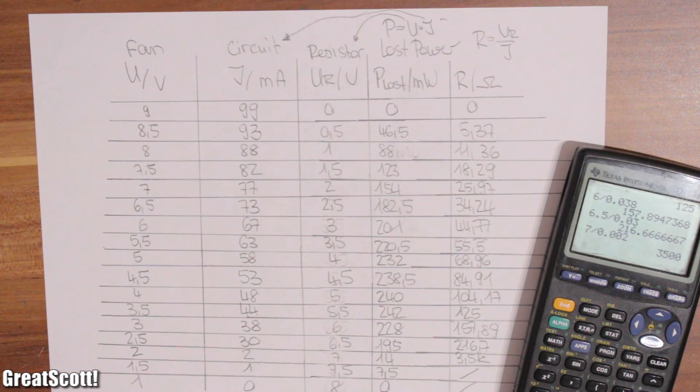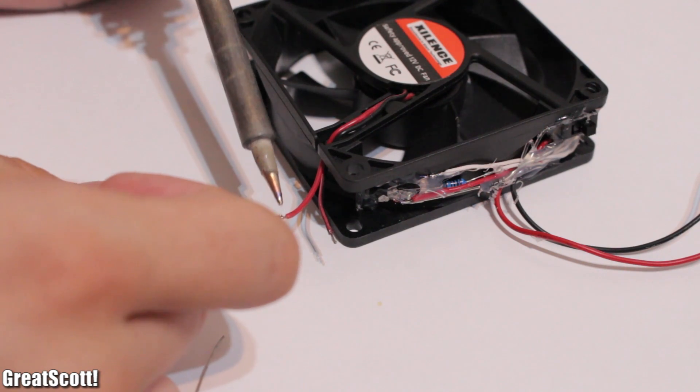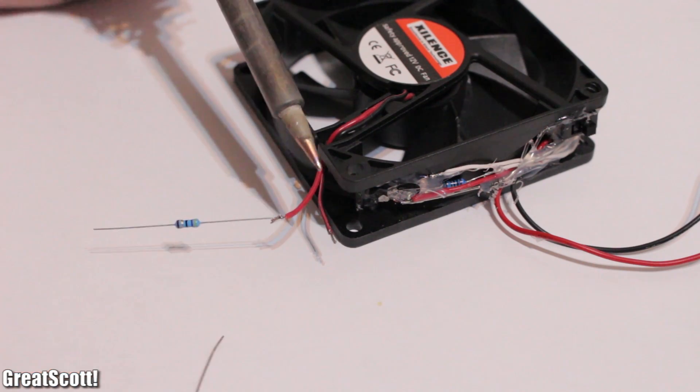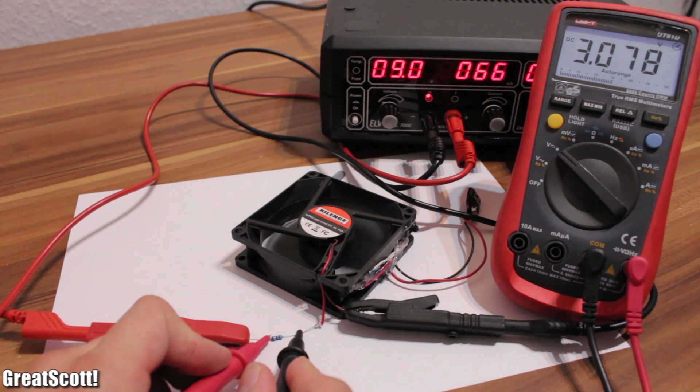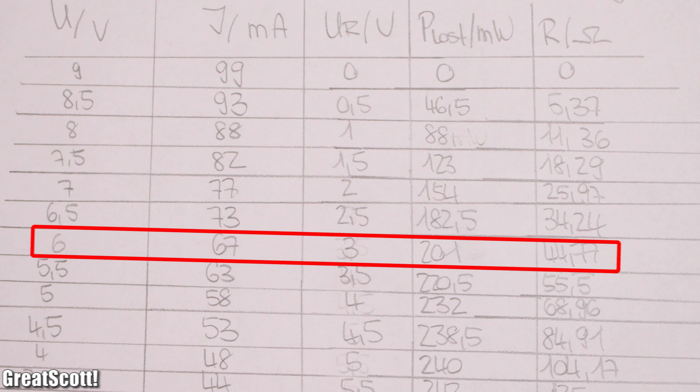Now you are thinking, is this really true? We can test it. Here is a 47 ohm resistor. I put it in series and bam. A voltage drop of around 3 volts and a current flow of around 64 milliamps. Just as we predicted.